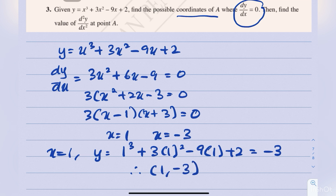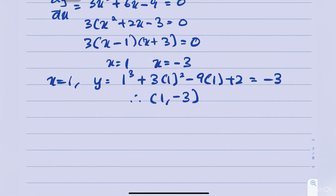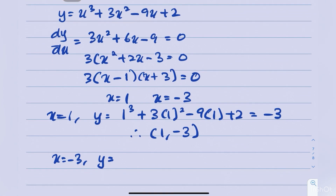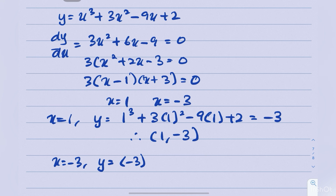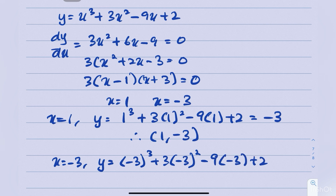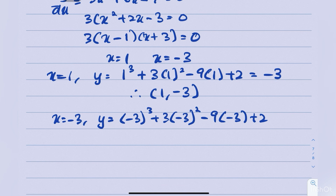For x equals negative 3: substituting into y equals 2x cubed plus 3x squared minus 9x plus 2. y equals negative 27 plus 27 plus 27 plus 2, which equals 29. So the second coordinate of A is (negative 3, 29).